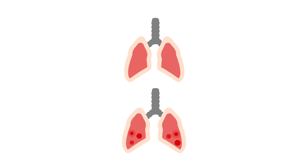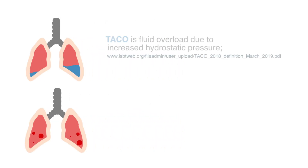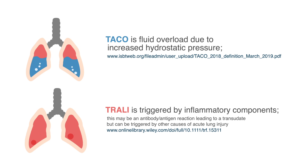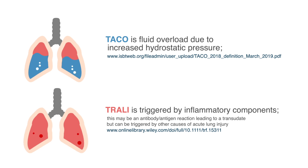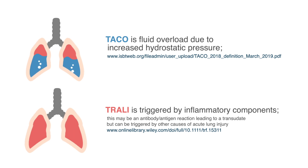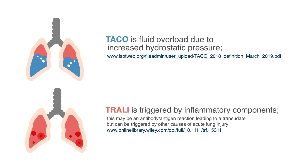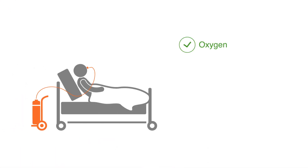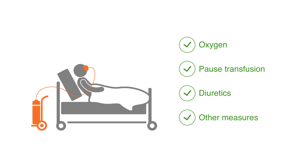In 2019, the definitions of both TACO and TRALI were revised. At the bedside and on chest X-ray, it may be difficult to distinguish between them, and a patient could have both at the same time. If a patient has difficulty breathing, they need urgent attention, with oxygen, a pause in the transfusion, and consideration of other rescue treatments, including diuretics and possibly ventilation.